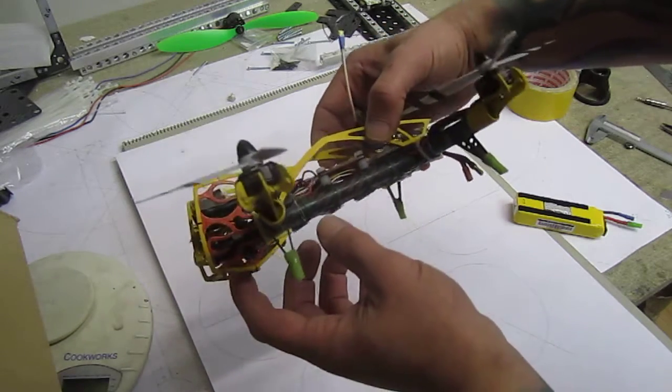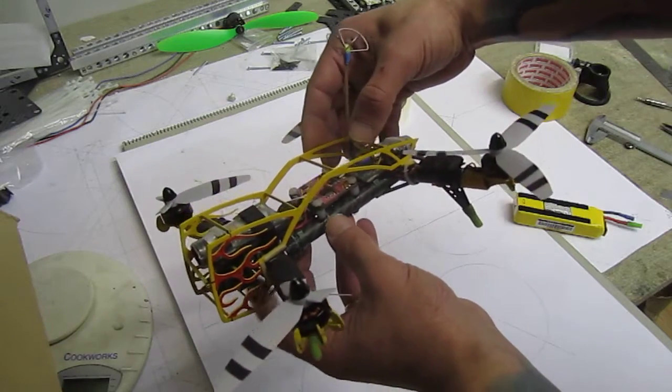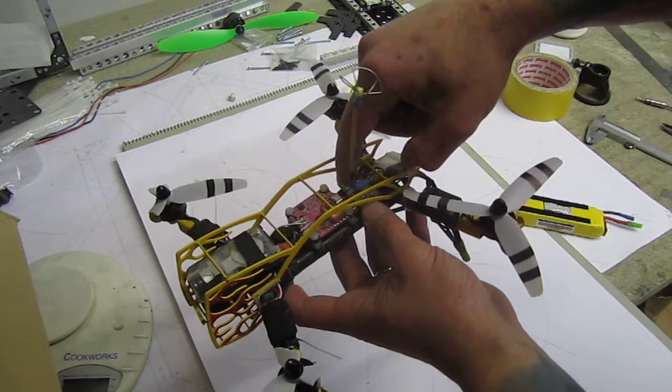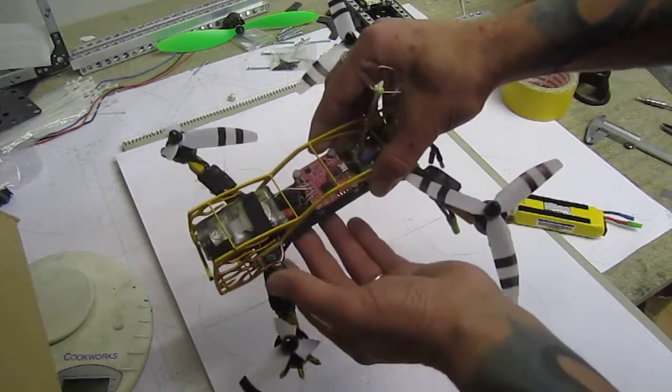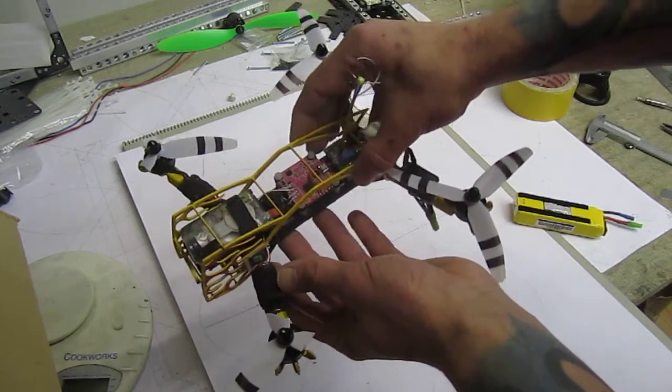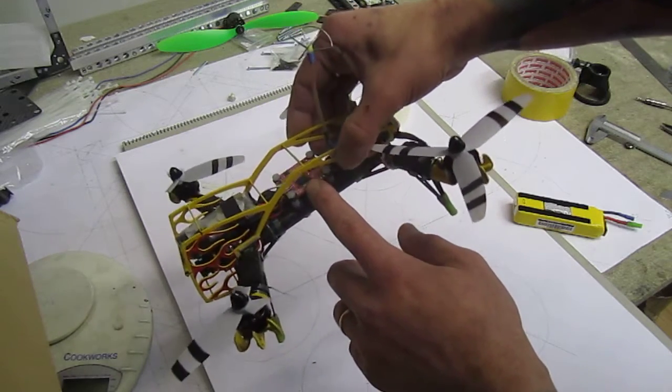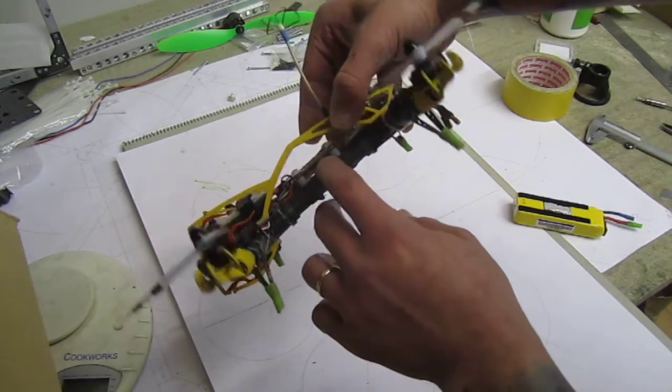So I'm feeding my camera and I'm feeding my mini OSD. Now from one of the ESCs BEC, I'm feeding my Naze32 board and my receiver. The receiver is stuck on underneath the board and soldered directly to the board.